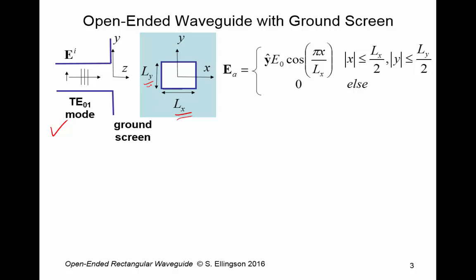We're assuming the electric field is y hat polarized. Magnitude and phase E0. And then we have this cosine dependence, which the argument is pi X over LX. So if you think about this for a second, what this does is it gives you a non-uniform magnitude that kind of looks like this. It goes to zero at either end and is maximum in the center.